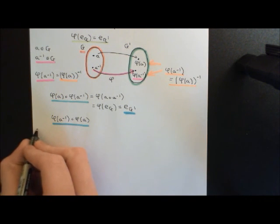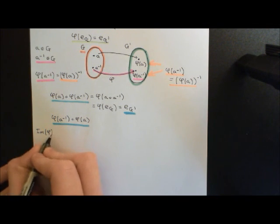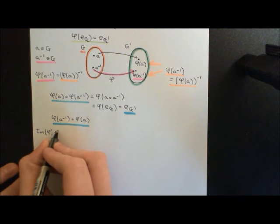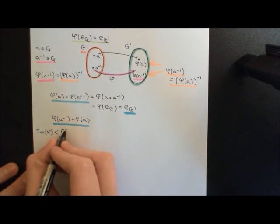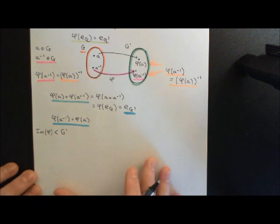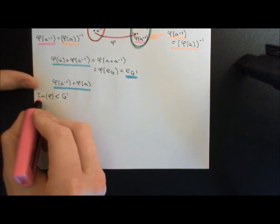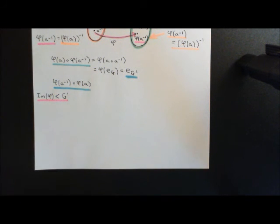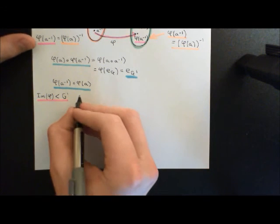So the next thing I want to prove is that the image of a homomorphism — the image of our homomorphism which we're denoting phi — is a subgroup, denoted by the less-than sign, of the codomain group G prime. Let's remind ourselves of the definition of the image of a homomorphism.